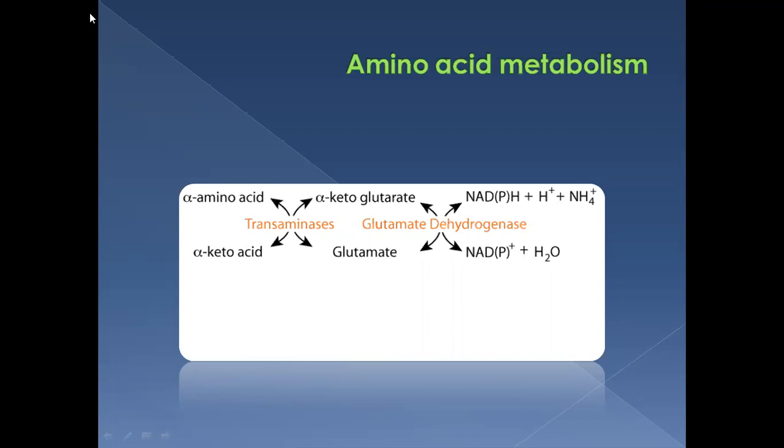We all know that amino acids are obtained from proteins, and proteins are obtained from the diet. Sometimes amino acids are also obtained by the degradation of endogenous proteins. These amino acids can be used for the synthesis of new proteins, or they can be further degraded — meaning they can undergo metabolic processes where they get converted into a form of energy, that is ATP.